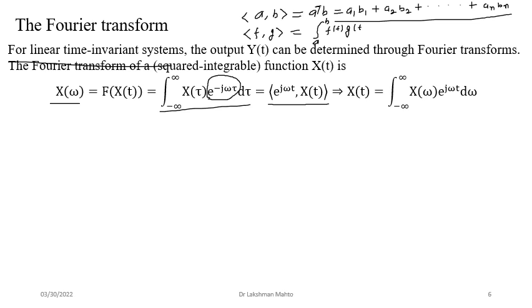For functions defined from minus infinity to infinity, the inner product is the integral over that range. The Fourier transform is the inner product between the signal X(t) and a special function. This special function is actually the eigenfunction of the Fourier transform operator, analogous to eigenvectors in finite dimensional space.